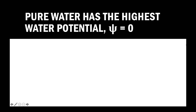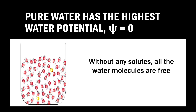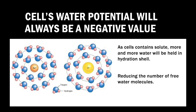It is important for students to know that pure water has the highest water potential, with psi equal to zero. In pure water, without any solutes, all the water molecules are free. The water potential of a cell will always be at a negative value. This is because cells contain solutes. As more and more solutes are added to a solution, more and more water will be held in a hydration shell, thus reducing the number of free water molecules.